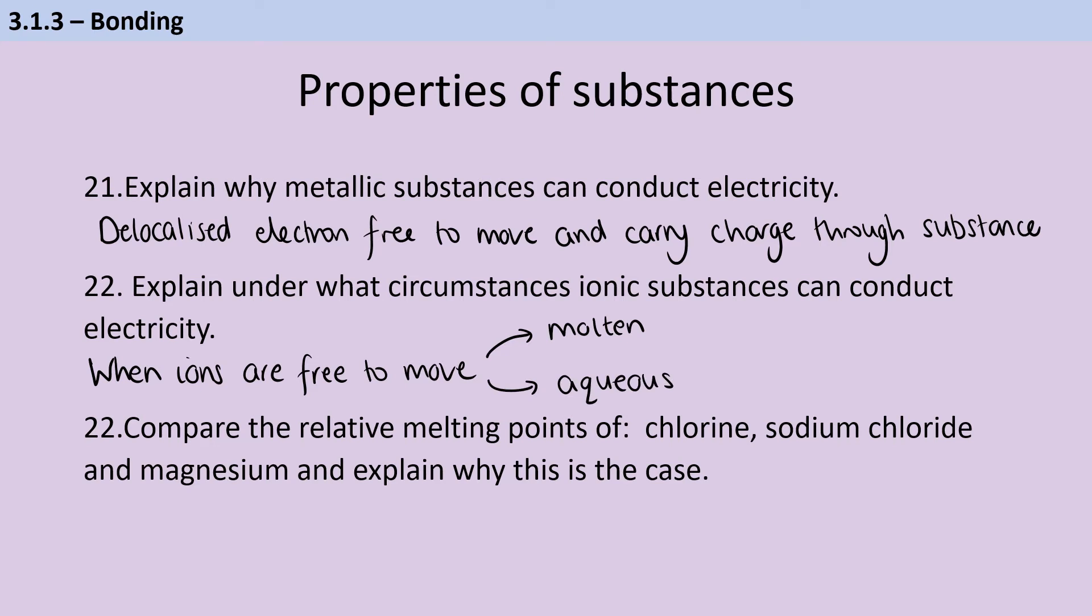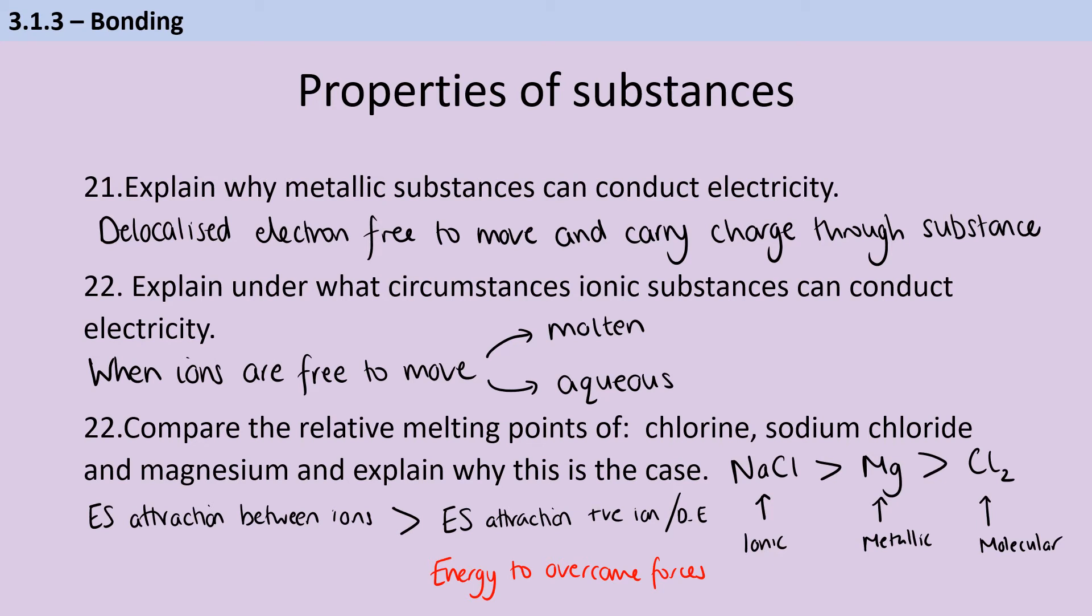If we look at chlorine, sodium chloride and magnesium, we're going to find that sodium chloride has got the highest melting point and chlorine has got the lowest melting point. And this is down to their relative bonding. So the sodium chloride, of course, is ionic and magnesium is metallic and chlorine is molecular. And once we know that, we can consider the amount of energy that it takes to overcome the forces between the particles. So in ionic bonding, we have this strong electrostatic force of attraction between the positive and negative ions. And that is a stronger force than the electrostatic attraction between the positive ions and the delocalized electrons in magnesium. So that's why the sodium chloride has a higher melting point than the magnesium.